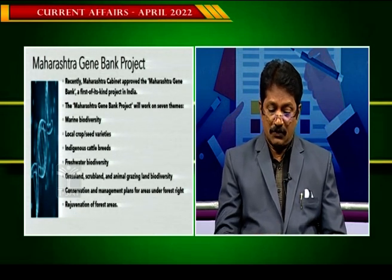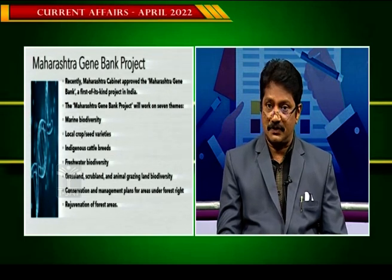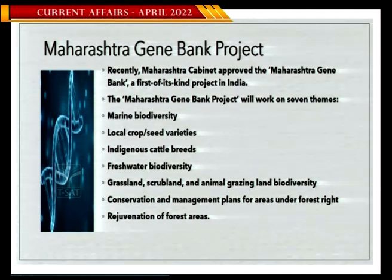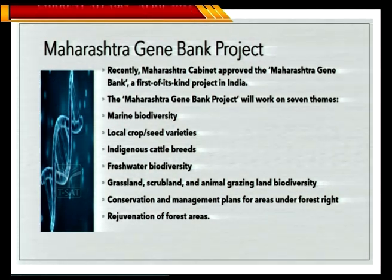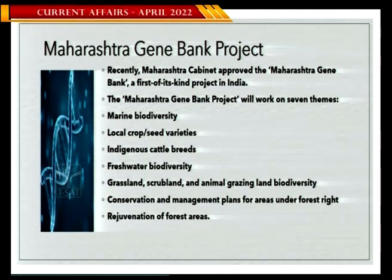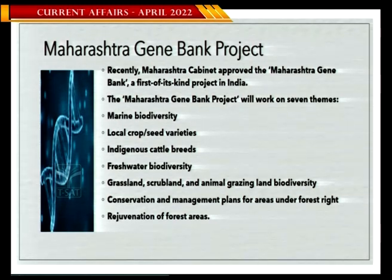The Maharashtra Genetic Bank project will work on seven themes — very important to understand. The first is marine diversity and biodiversity. The second is local crop seed and seed varieties. The third is indigenous cattle breeds. The fourth is fresh water biodiversity. The fifth is grassland, scrubland and animal grazing land biodiversity. The sixth is conservation and management plans for areas under forest rights and rejuvenation of forest areas. The key exam question: which state started the Genetic Bank project first in India? Maharashtra.